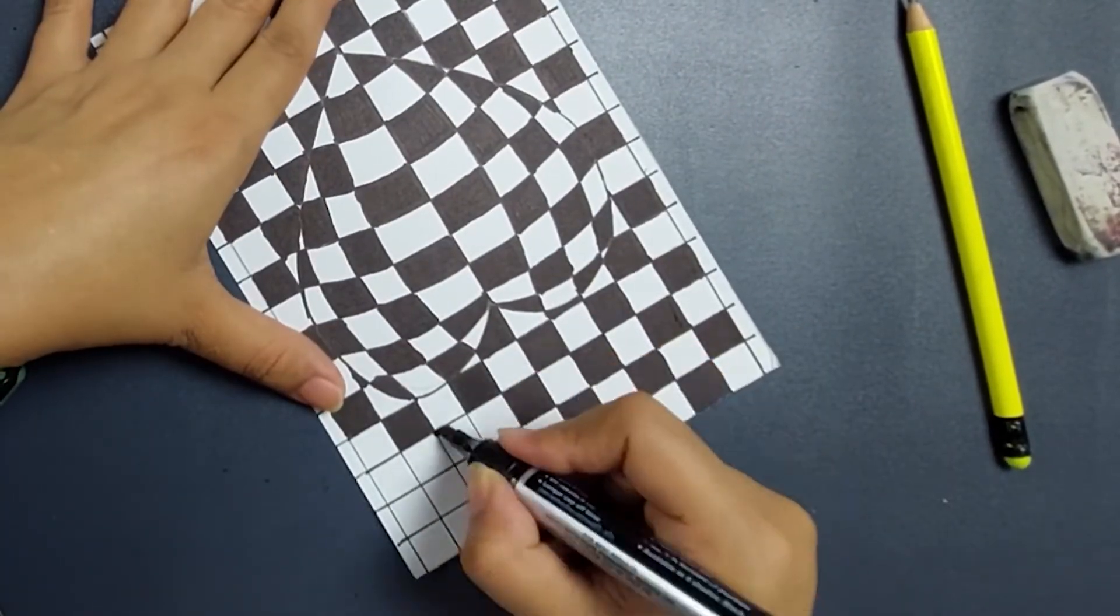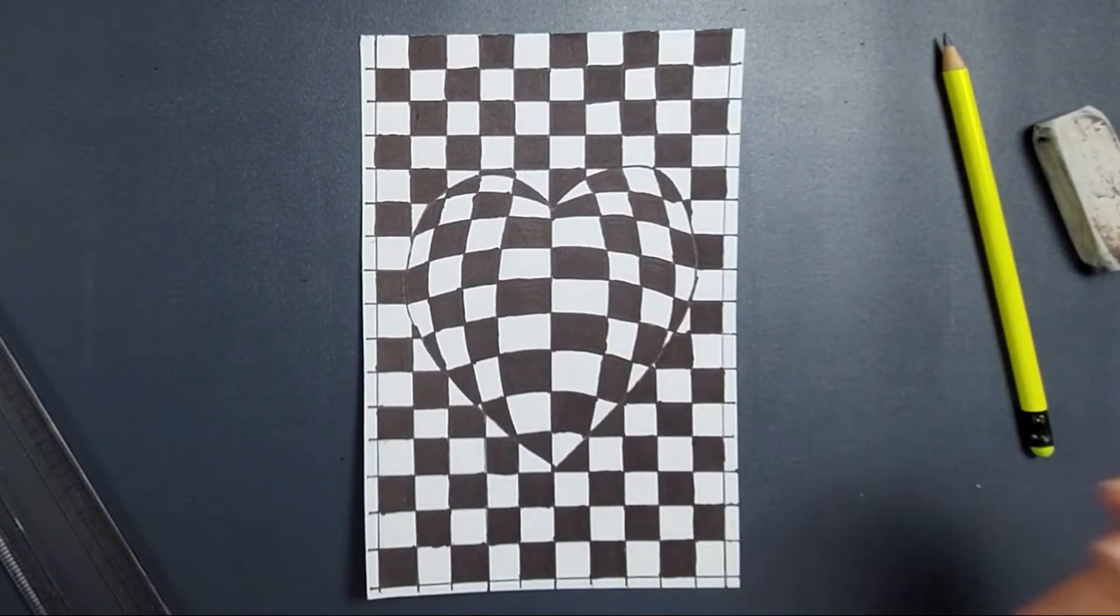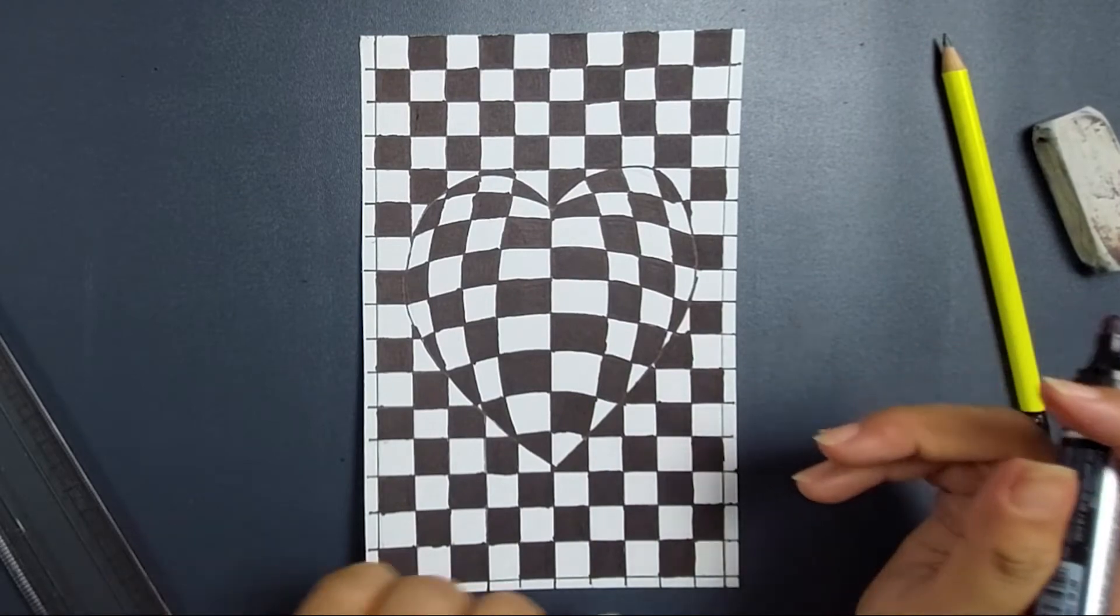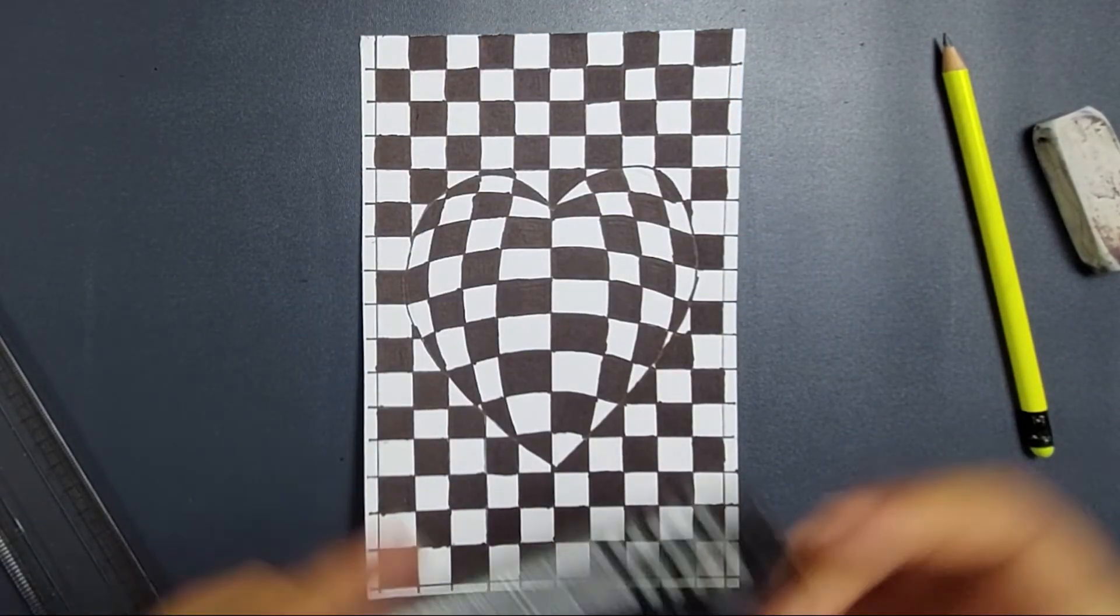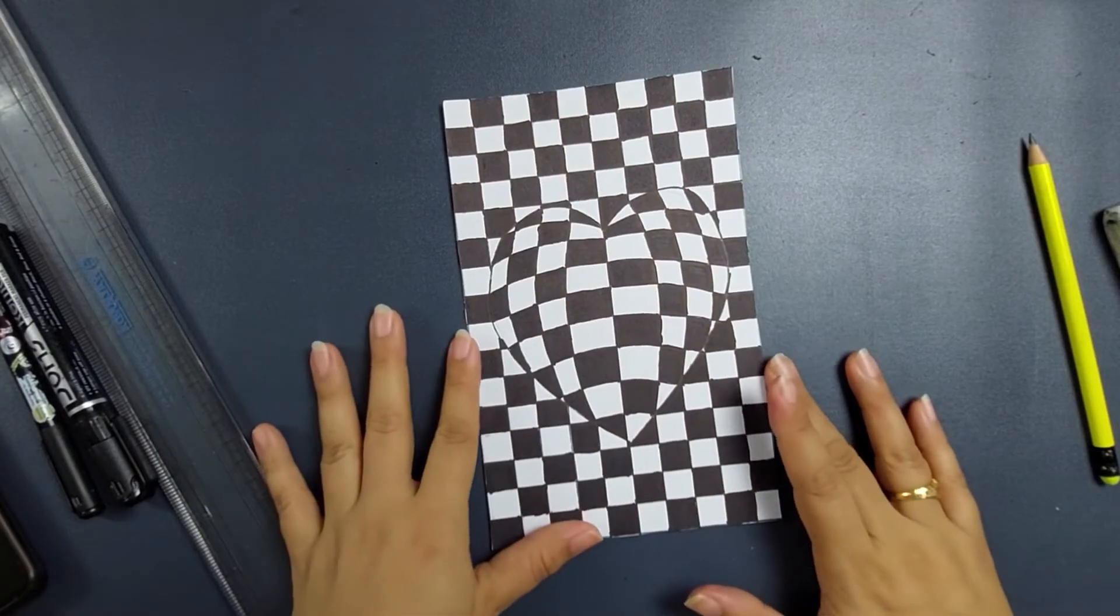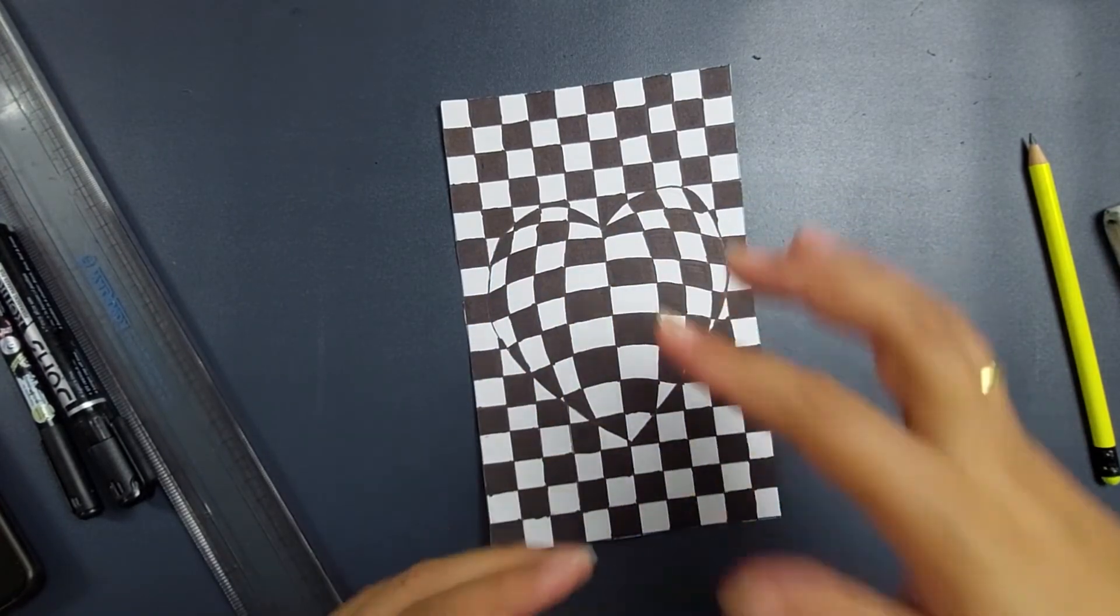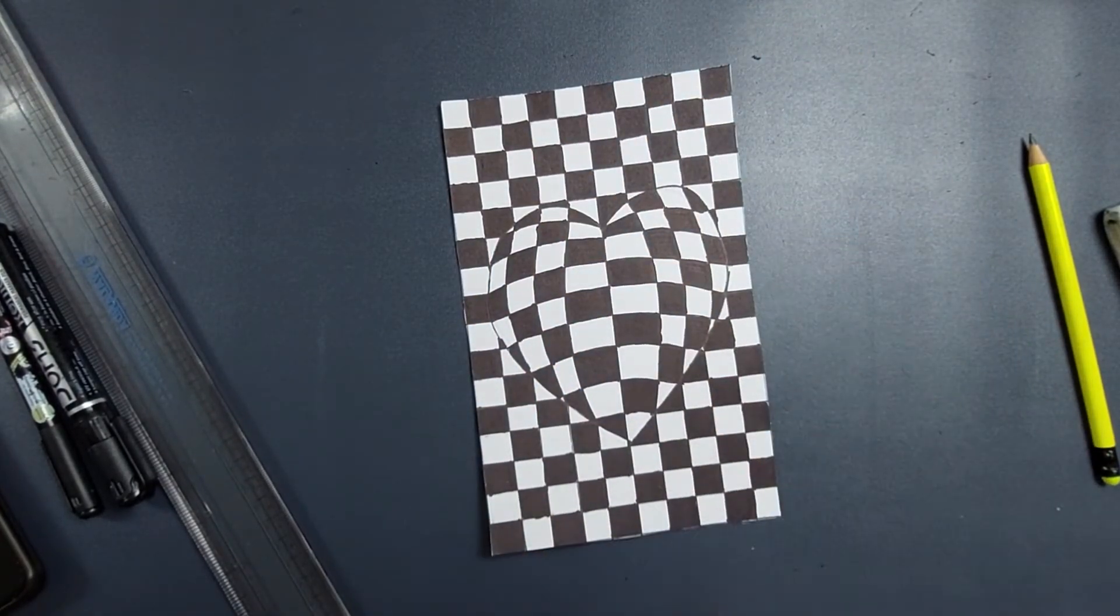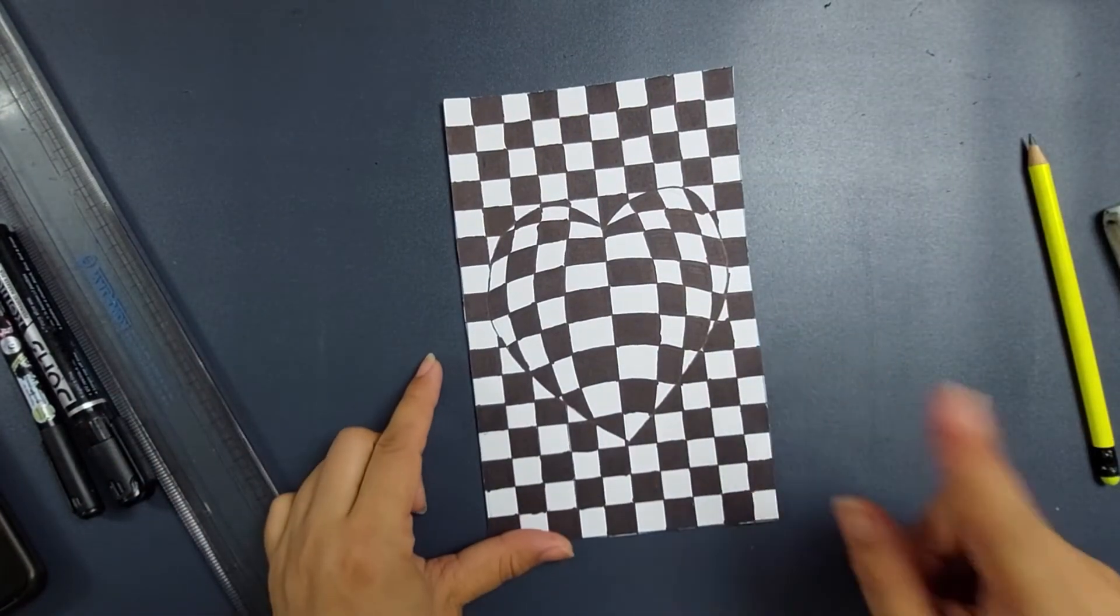You all can see the illusion. We can either cut this small area and if you want you can even color that area, you can do that also. You all can see this, you can feel that heart is popping up between this. And I hope you all will enjoy making it.